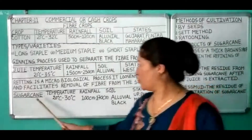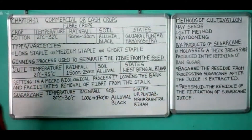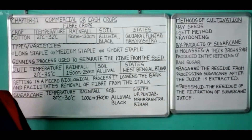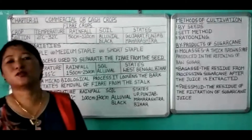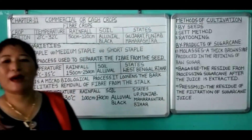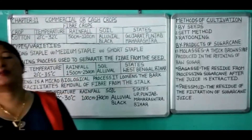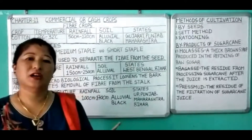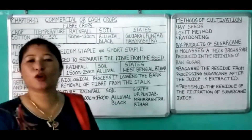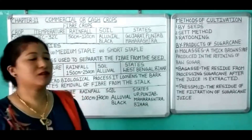Now let's take the last crop - sugar cane. It is also a cash crop. There are certain points to remember regarding the cultivation of sugar cane. It is one of the most important cash crops of our country. It belongs to the bamboo family of plants. It is a main source of gul, kansari, and sugar. It is a tropical crop and grows in the correct season.